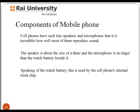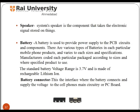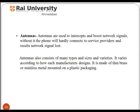Mobile phones have tiny speakers and microphones. The speaker is about the size of a dime and the microphone is no larger than a watch battery. The speaker is the component that takes electronic signals and converts them. A battery is used to provide power supply to the PCB circuits and components. There are various types of batteries for each particular mobile phone product, varying in size and specifications. Manufacturers code each particular battery packet according to size and the specified product it is used for. The battery connector is the interface where the battery connects and supplies voltage to the cell.